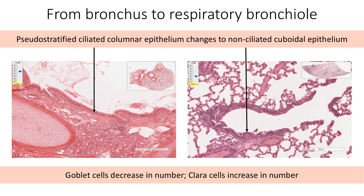From bronchus to respiratory bronchioles, the pseudostratified ciliated columnar epithelium changes to non-ciliated cuboidal epithelium. The number of goblet cells decreases, and the number of Clara cells increases as we come towards the bronchiole.